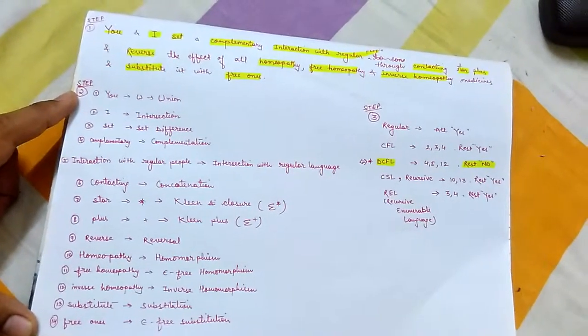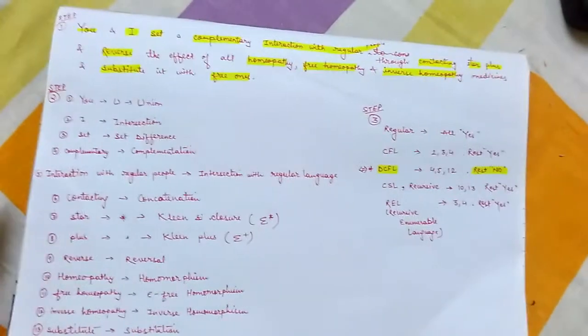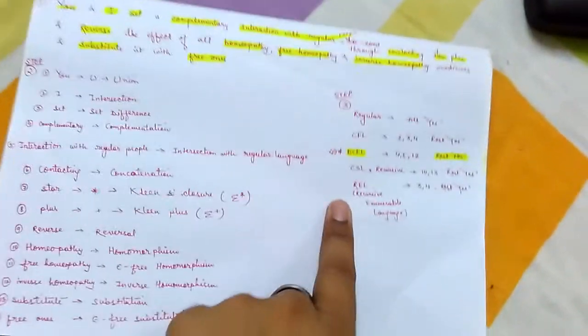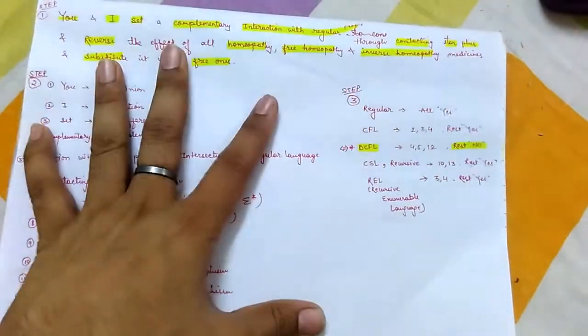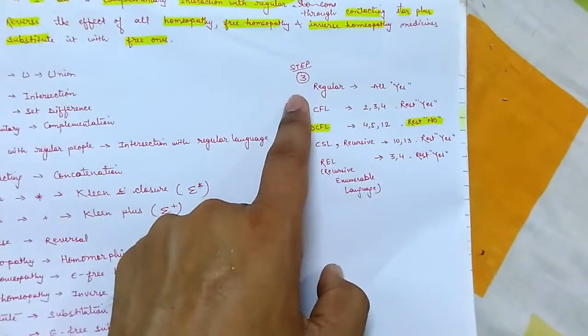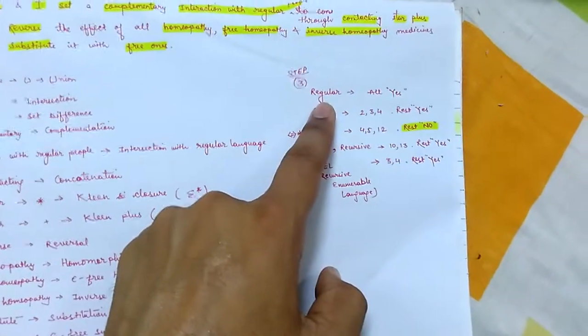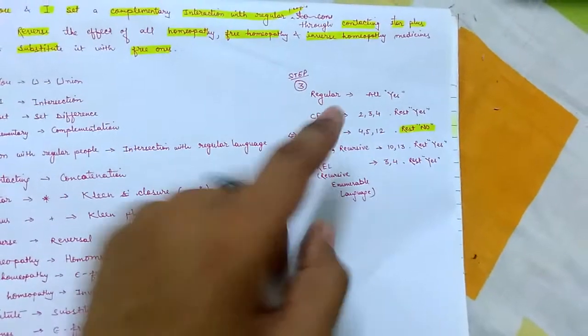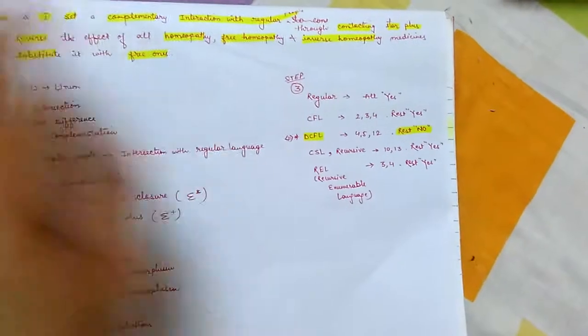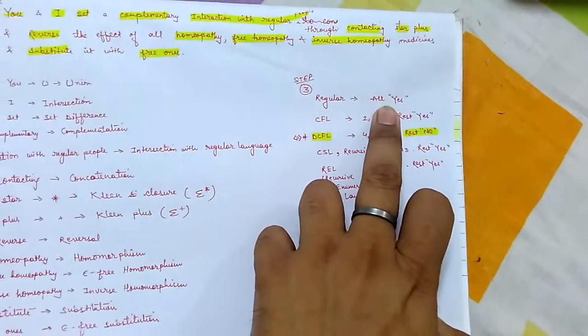This is most important, and the next most important thing is this one. After this you will be able to remember closure properties. The third step is regular. You know that in regular, all are decidable and all are closed. That means all the properties are closed under regular language, so all yes.